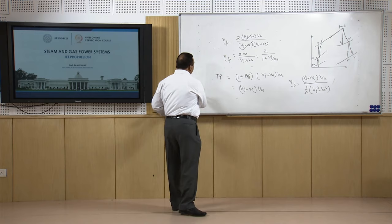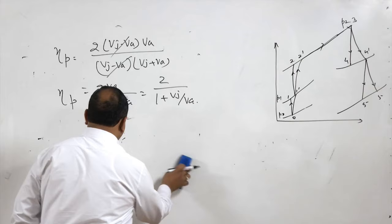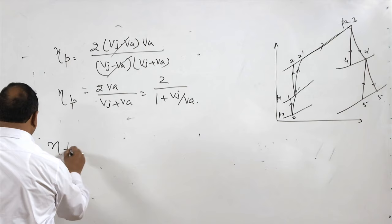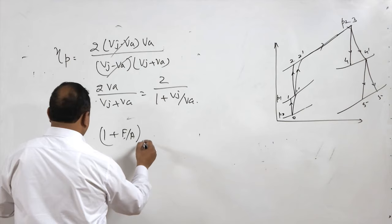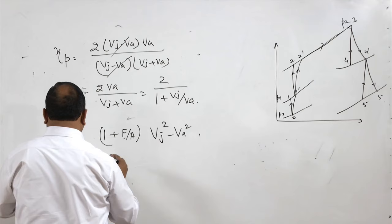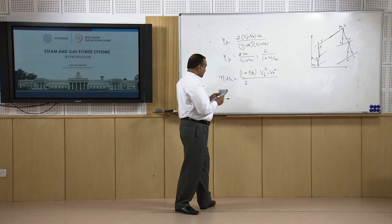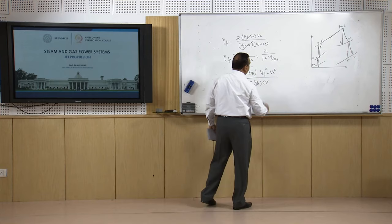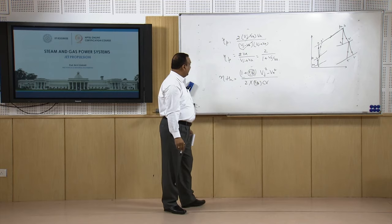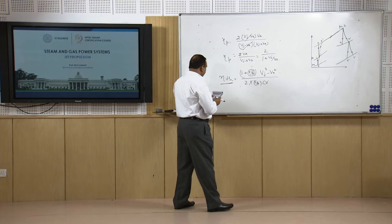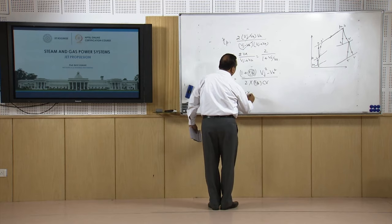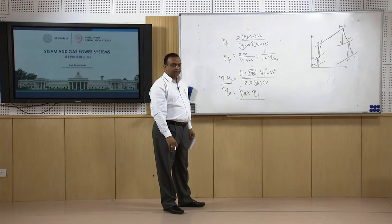Every power-generating machine has thermal efficiency. A jet engine's thermal efficiency is the change in kinetic energy — ½(1 + F/A)·V_j² − ½·V_A² — divided by the mass of fuel multiplied by the calorific value of the fuel. Overall efficiency is thermal efficiency multiplied by propulsive efficiency, giving the overall efficiency of the jet propulsion system.